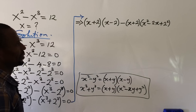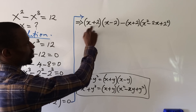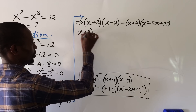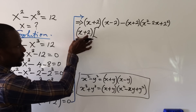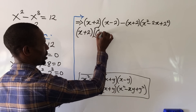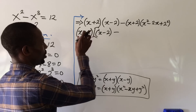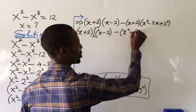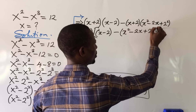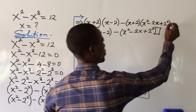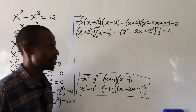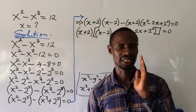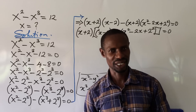The second part gives us minus bracket x plus 2, close bracket, times bracket x squared minus 2x plus 2 squared, close bracket, equal to zero. Now we notice that x plus 2 appears in both terms, so we can factor it out. We get x plus 2, in square brackets: bracket x minus 2, close bracket, minus bracket x squared minus 2x plus 4, close bracket, equal to zero.